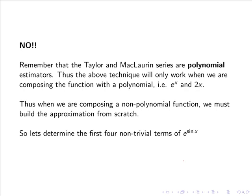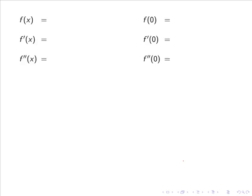So let's determine the first four non-trivial terms of e to the sine x. In this case f of x equals e to the sine x. And if we evaluate this function at 0 we have e to the sine 0 which is e to the 0 or simply 1.